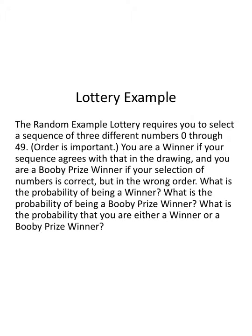The random example lottery requires you to select a sequence of three different numbers, 0 through 49. Order is important. A sequence. You're a winner if your sequence agrees with that in the drawing. And you're a booby prize winner if your selection of numbers is correct but in the wrong order. What's the probability of being a winner? What's the probability of being a booby prize winner? What's the probability that you are either a winner or a booby prize winner?